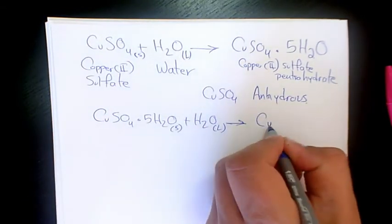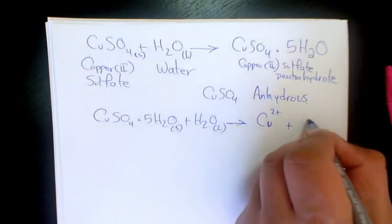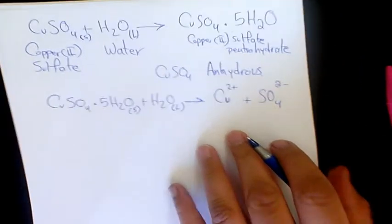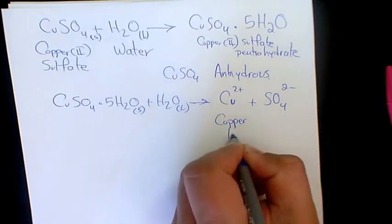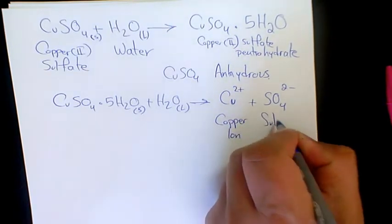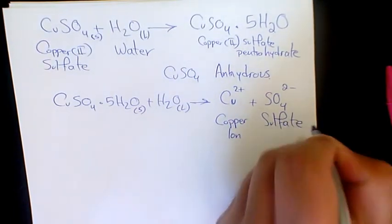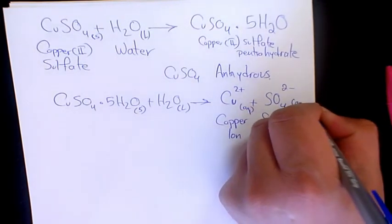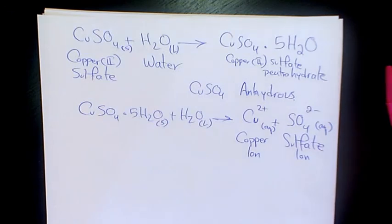Because it's soluble, it's going to produce its ions, which are copper 2+ and sulfate ion—copper ion and sulfate ion—and both of them are in aqueous condition. So that's the reaction between copper 2 sulfate and water.